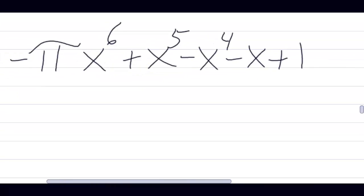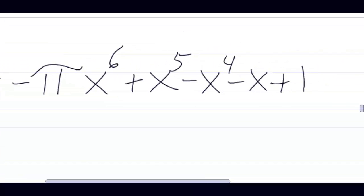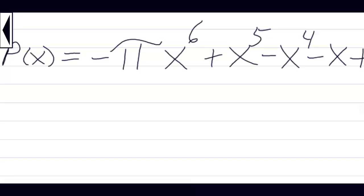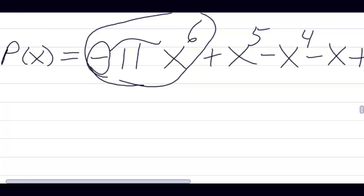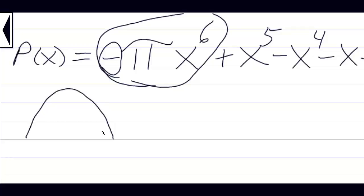All you're being asked to do in this problem is predict the end behavior — you don't have to graph it. Notice first that the highest power term is x to the sixth, which is an even number. And notice the negative sign in front. That means the end behavior of this function, regardless of what it looks like in the middle, will be exactly the same as the end behavior of y = -x².